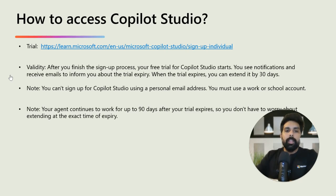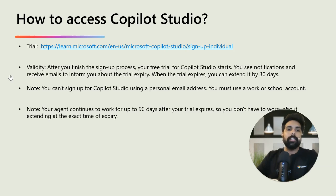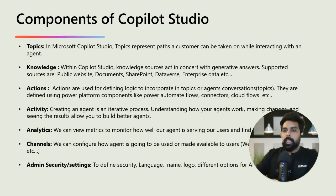Once your trial expires and the subscription expires, your built agents which you have built based on the trial subscription will be available for 90 days after your trial expires. So you don't have to worry about extending at the exact time of expiry. Now that we know what Co-Pilot and Co-Pilot Studio are and we understand how to enable the trial version.